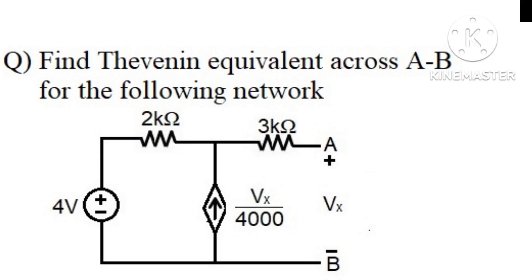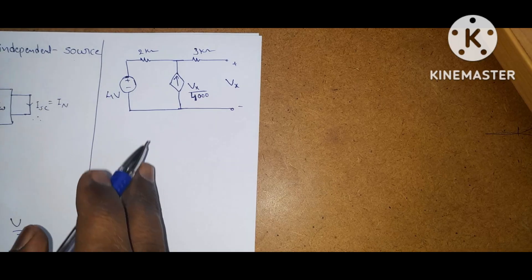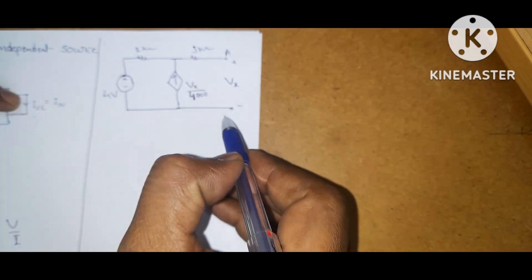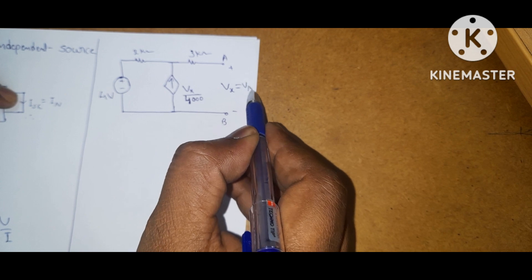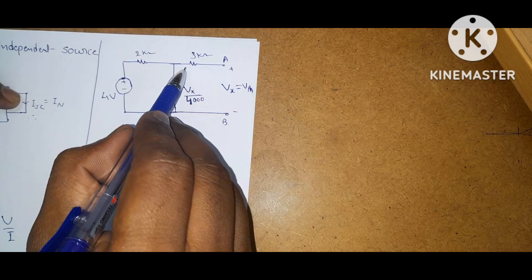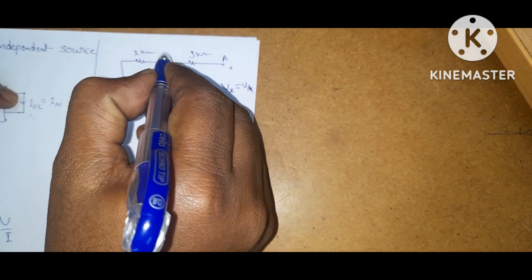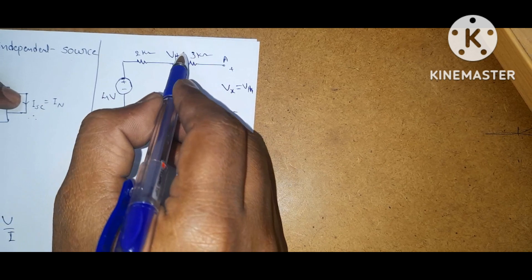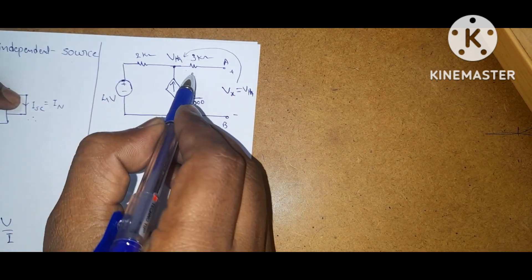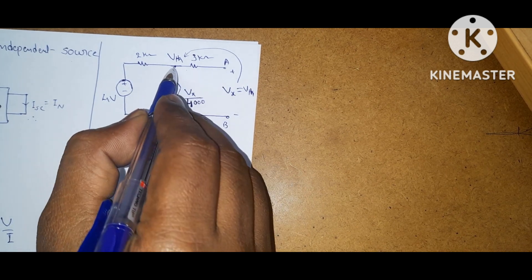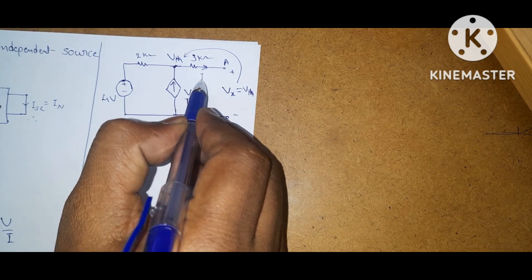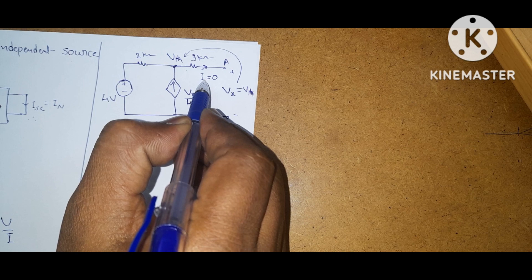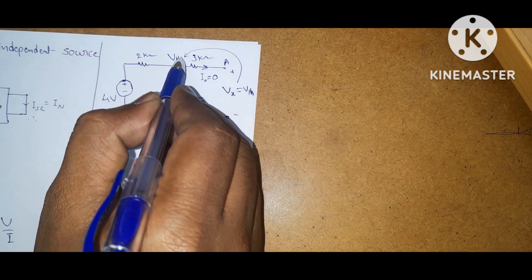Now we will solve some problems on this concept. The first question is: find the Thevenin equivalent across AB for the following network. In the given network, these two terminals are already open circuited. Vx equals V Thevenin in this case. Since there is no voltage source or current source in that branch, this open circuit voltage becomes the node voltage. Current flowing through this branch is 0 because it is open circuit, so I_oc equals 0 amps.